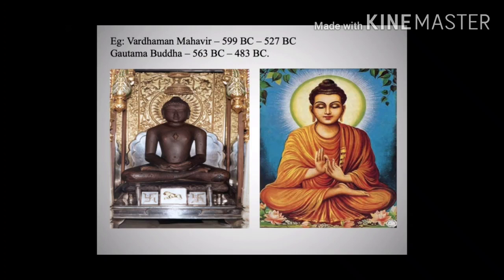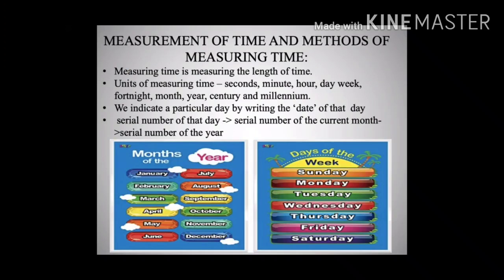In this manner we know Vardhamana Mahavira and Gautam Buddha's birth and death. The measure of time and the method of measuring time: to measure time is to measure the length of time. We know the following units of measuring time: second, minute, hour, day, week, fortnight, month, year, century, and millennium. A second is the smallest of these units.